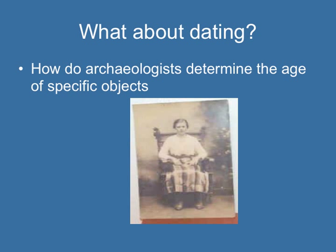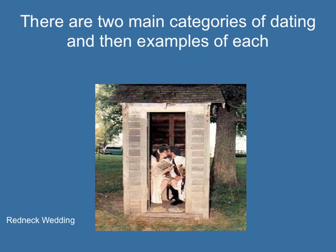We're talking about how archaeologists determine the age of specific objects. Does anyone know the two main categories of dating? You should know one is relative and one is absolute.